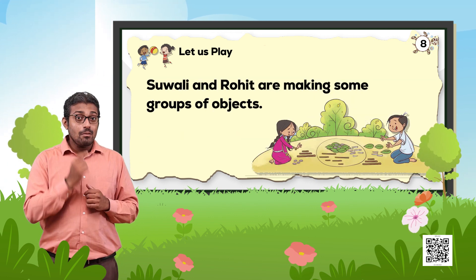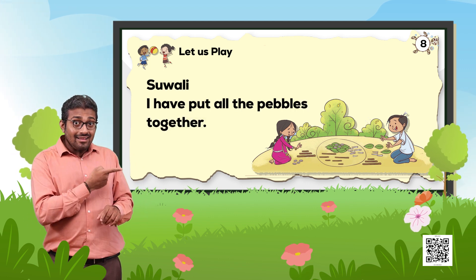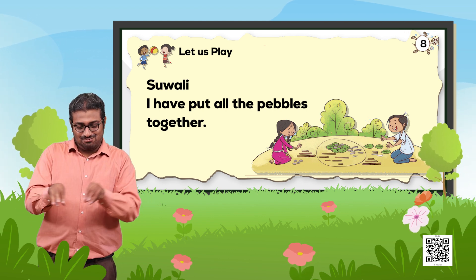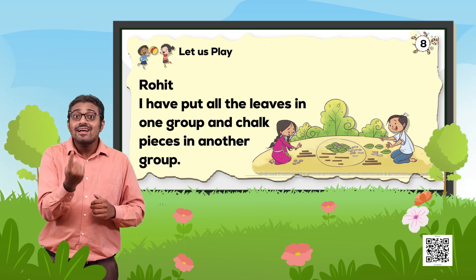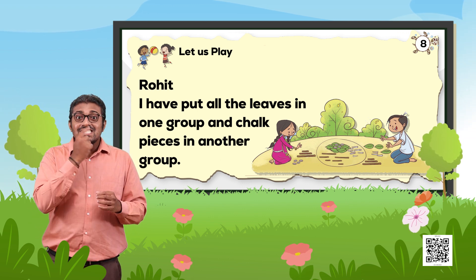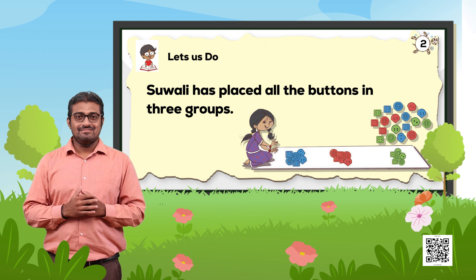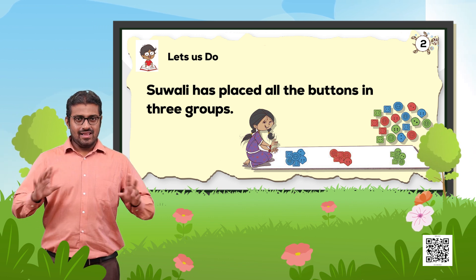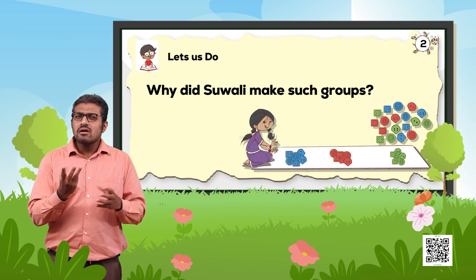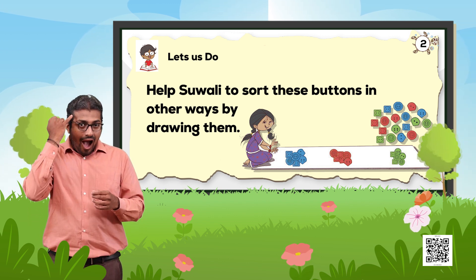Suwali and Rohit are making some groups of objects. Suwali says: I have put all the pebbles together. Rohit says: I have put all the leaves in one group and chalk pieces in another. Let us do: Suwali has placed all the buttons in three groups. Why did Suwali make such groups? Help Suwali to sort these buttons in other ways by drawing them.